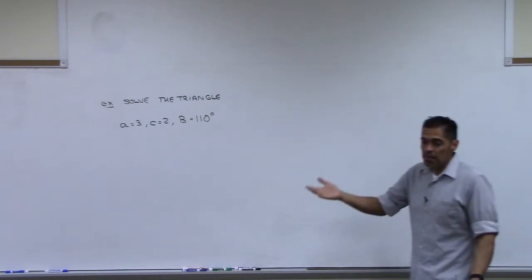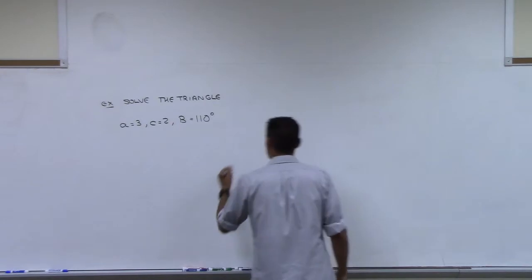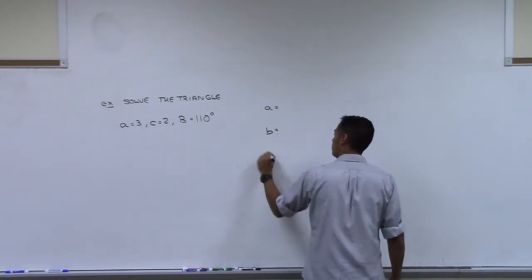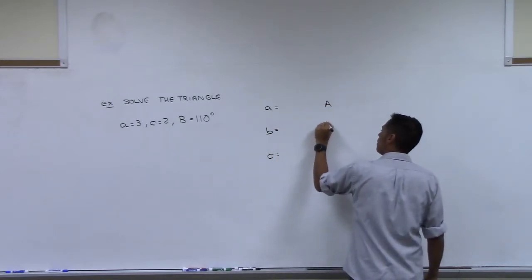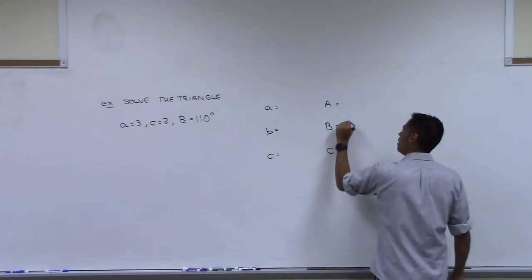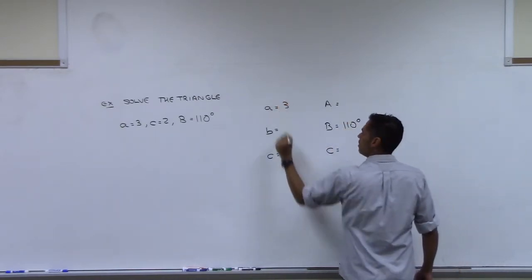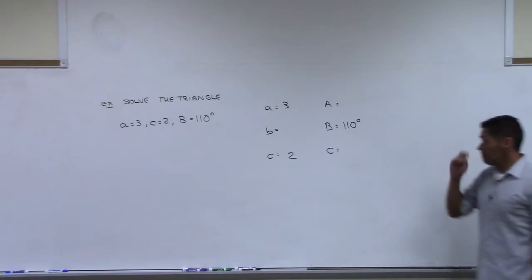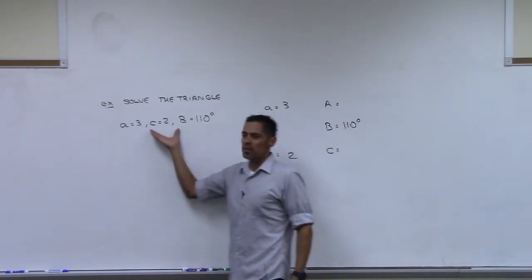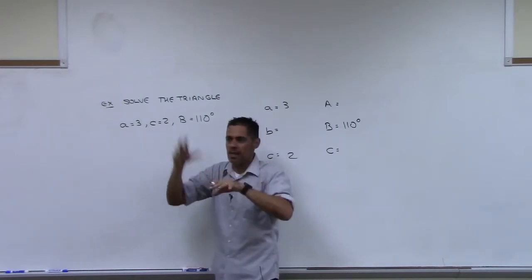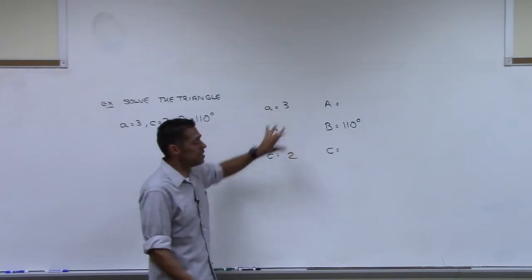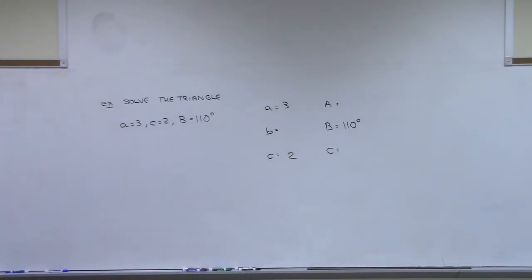If I were going to do this problem, going off of what I did last time, I would list out A, B, C and then capital A, capital B, capital C, and just fill things in. A is 3, C is 2. I just wanted you to see the way it's presented in the book does not look like what I did in class — they don't give you a little table to fill out. So I'm going to turn it into this so we can identify what we need to do.